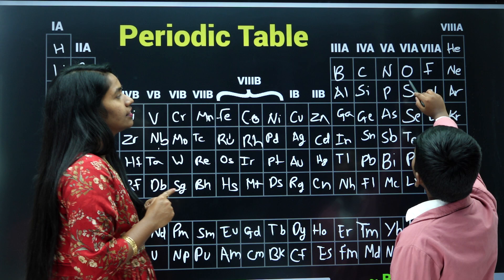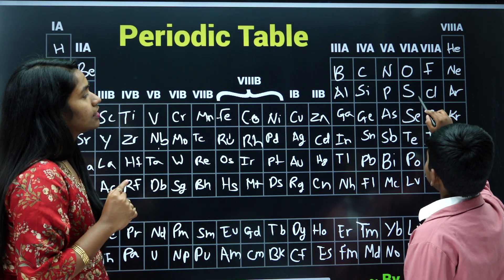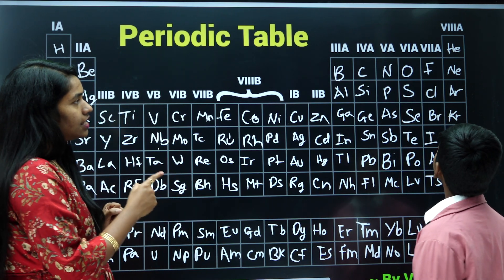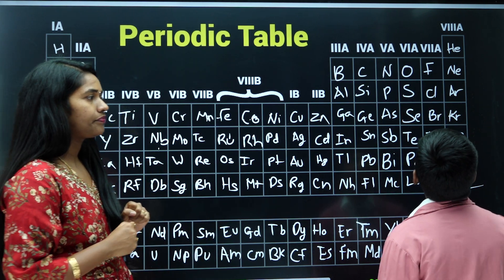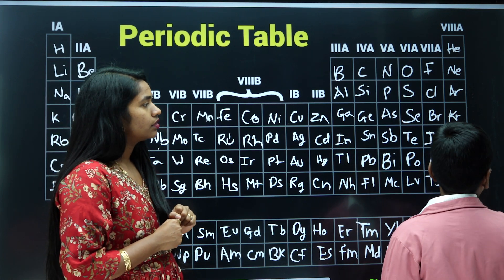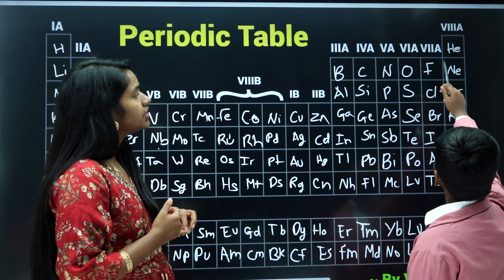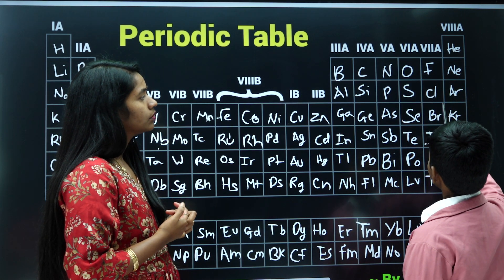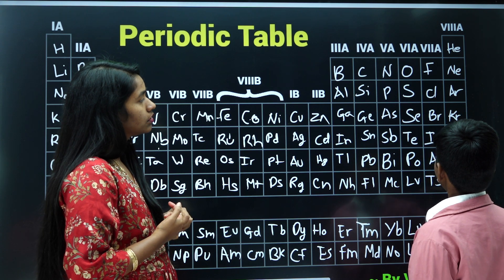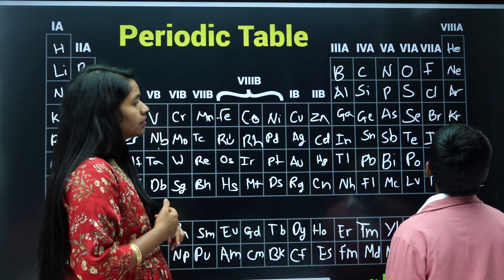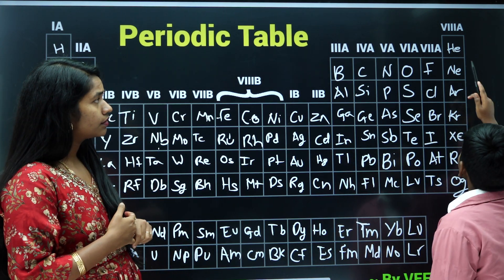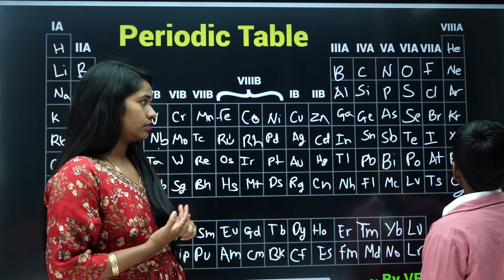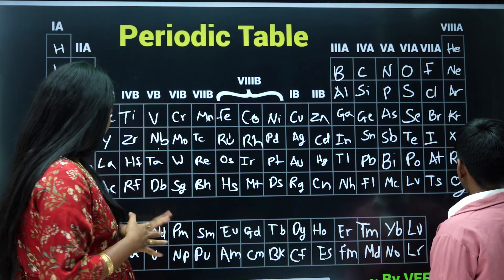6th group? Oxygen, sulfur, selenium, tellurium, polonium. 7th group? Fluorine, chlorine, bromine, iodine, astatine. 8th group? Helium, neon, argon, krypton, xenon, radon.